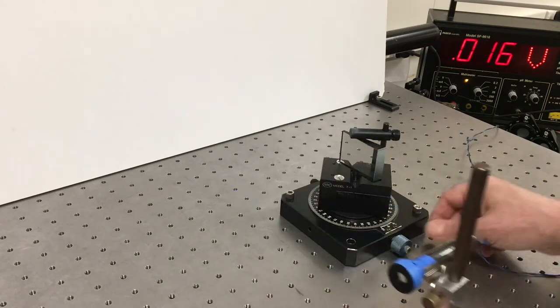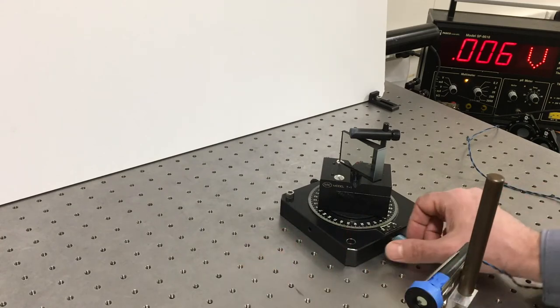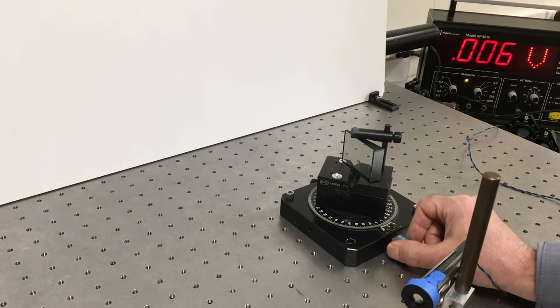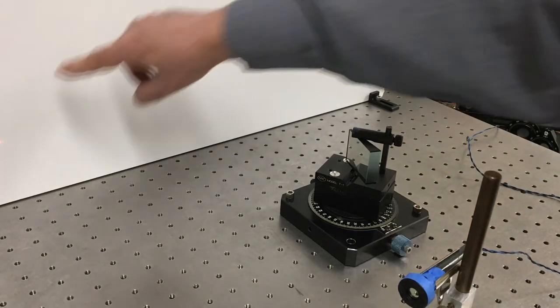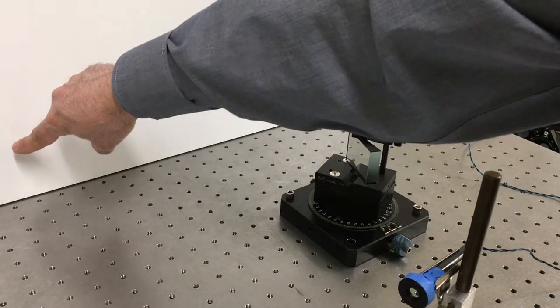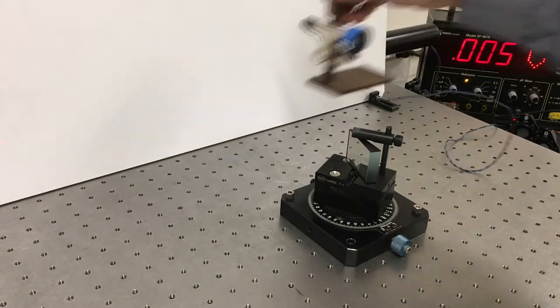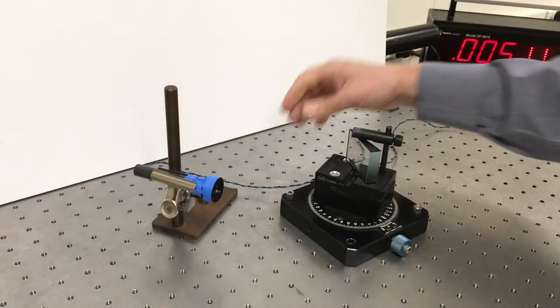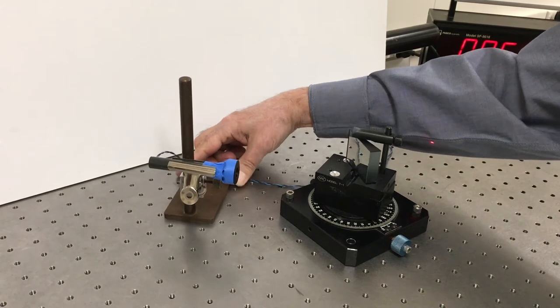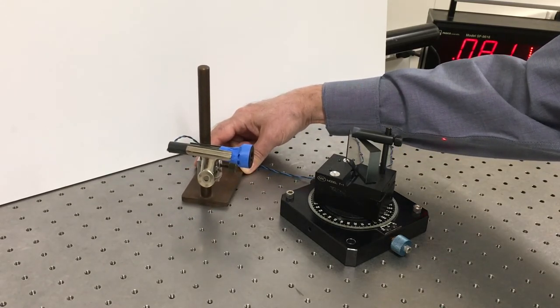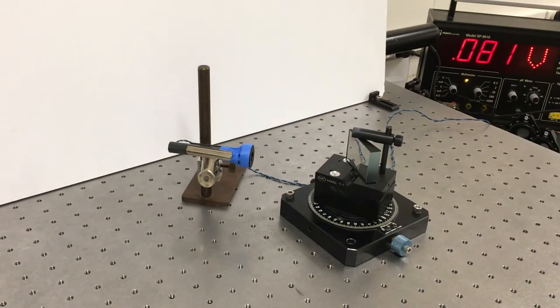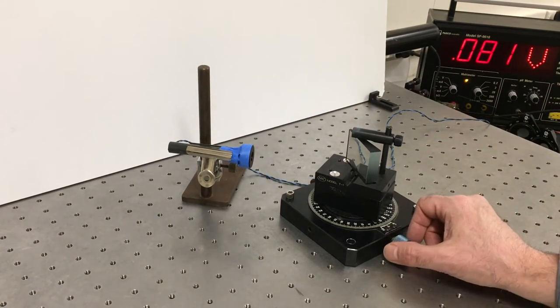And then we'll measure how much light is reflected at various angles. I'm going to start at 20 degrees here, and we can just barely see the reflections hitting the screen over there. So now I'm going to try to measure that using our probe. There, alright, I'm at 0.08 at 20 degrees.